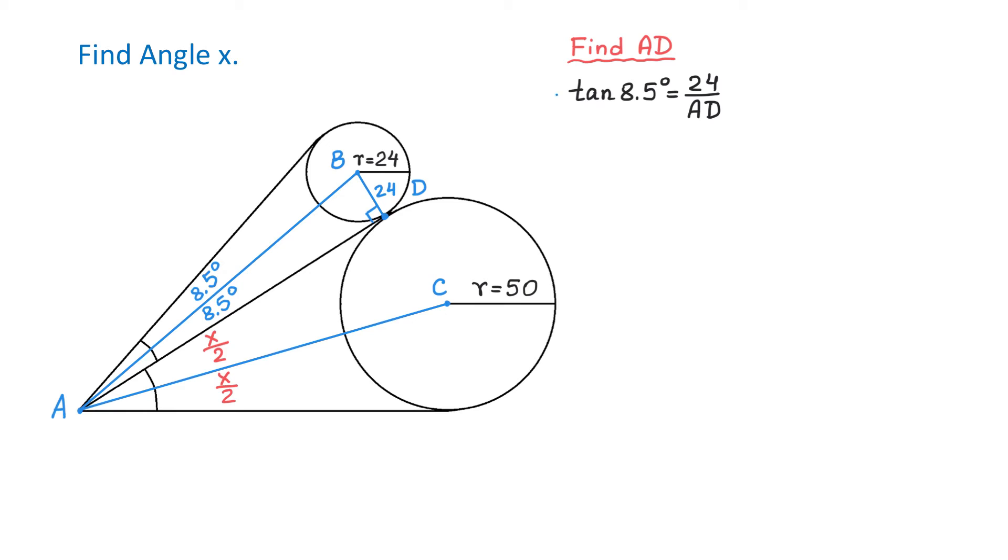To find AD, first we will multiply both sides by AD to eliminate the fraction on the right side. On the left side we will have AD times tangent of 8.5 degrees and on the right side we will have 24. Now we will divide both sides by tangent of 8.5 degrees. Then AD equals 24 over tangent of 8.5 degrees.